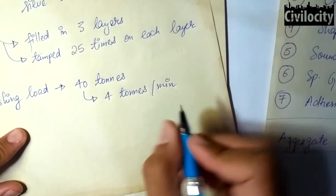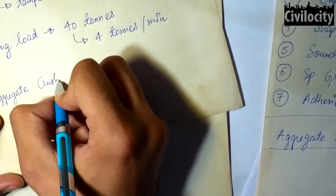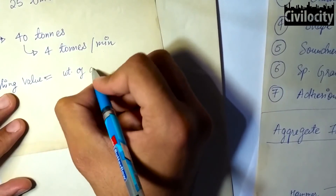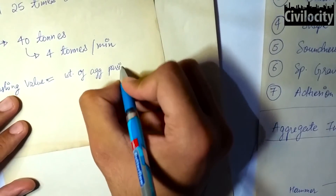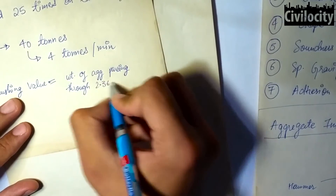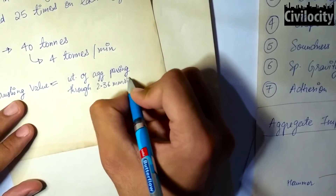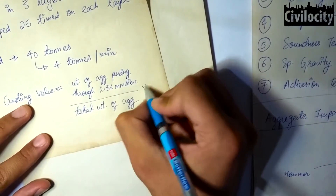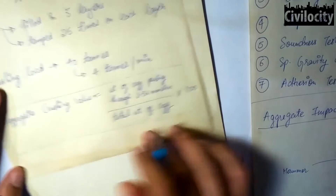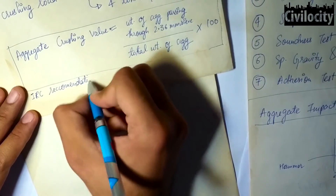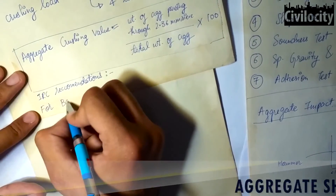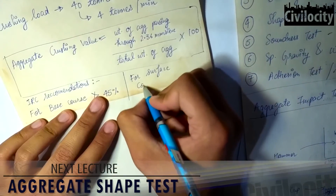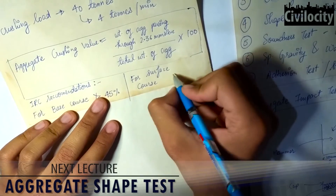After loading, the aggregates are sieved on a 2.36 mm sieve. The aggregates passing through the 2.36 mm sieve are weighed and divided by the total weight of the aggregates, which gives you the crushing value. Strong aggregates give a low aggregate crushing value. For good quality aggregate used in base courses, the crushing value shall not exceed 45%, and for surface courses it shall be less than 30%.